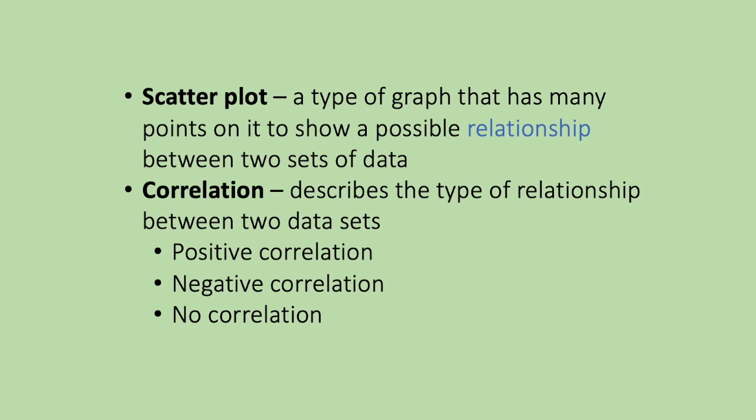Scatterplots are meant to show correlations or no correlation to describe the type of relationship between two data sets. Correlations can be positive, negative, or there can be just no correlation at all.